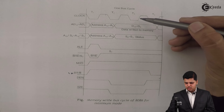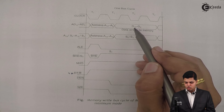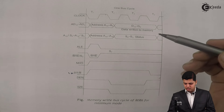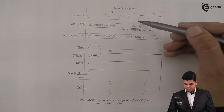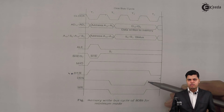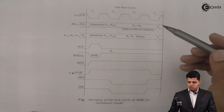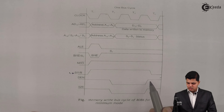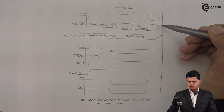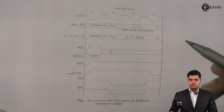In the T3 state, time is given for writing the data available on the multiplexed address and data bus to memory — D0 to D15 is written to memory. After the data is written, DEN bar goes high and WR bar goes high, disabling the transceiver and the RAM respectively. If the data is not written in T3, a wait state is added after T3 and the DEN and WR bar signals persist through the wait state. In the T4 state, the multiplexed address and data bus exits from the 8086, status goes for the next cycle, and all other initiated signals are deactivated.